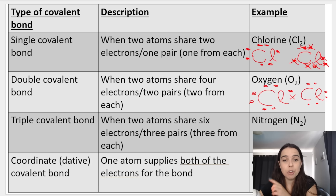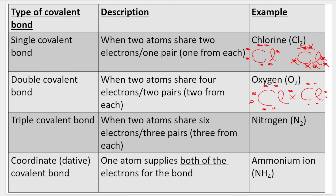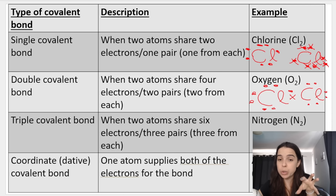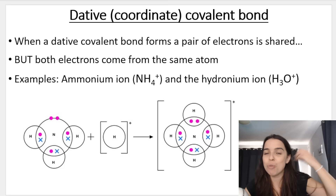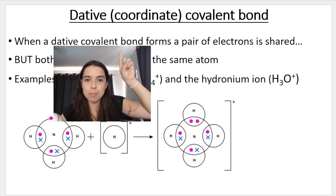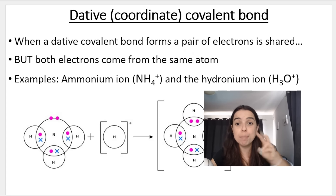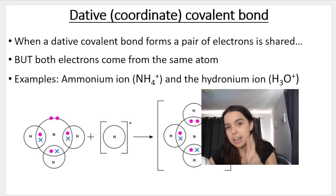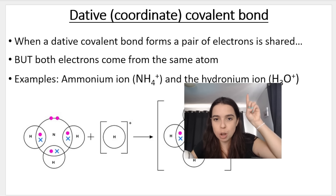What makes the dative covalent bond different is that both electrons that are shared come from the same atom. The other atom doing the sharing isn't actually contributing any electrons. A dative covalent bond forms when a pair of electrons is shared, but both of those electrons — that pair — comes from the same atom. We'll go over the two most common examples you can get in an exam.